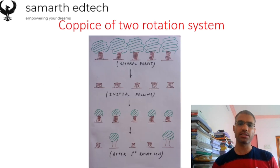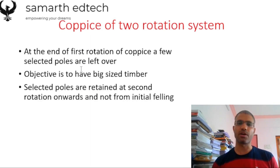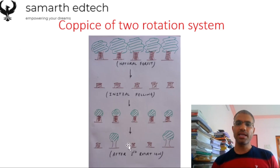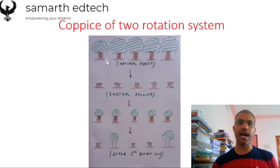The objective of the Coppice of Two Rotation System is to have big-size timber. The selected poles are retained at the second rotation onwards and not from the initial felling — remember this point. These poles or trees remain after the first rotation and not from the initial felling. At the initial felling stage the entire forest is cut down, but after the first rotation certain trees are left.